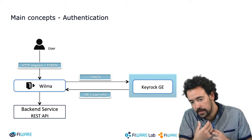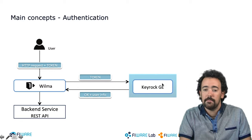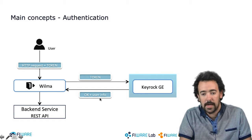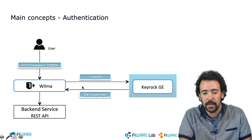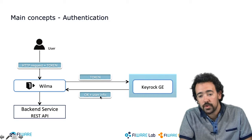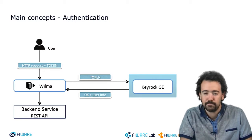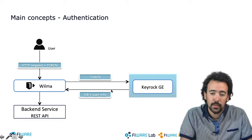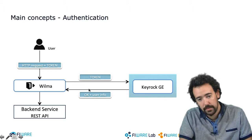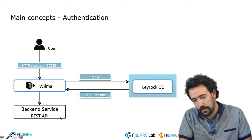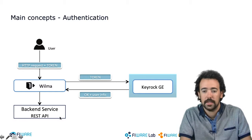If the validation succeeds, the Keyrock generic enabler will return a 200 HTTP response to Wilma and also include some information about the authenticated user. If the validation does not succeed, it will reject the response. Wilma will receive the user information and redirect the request to the backend service if everything works as expected.